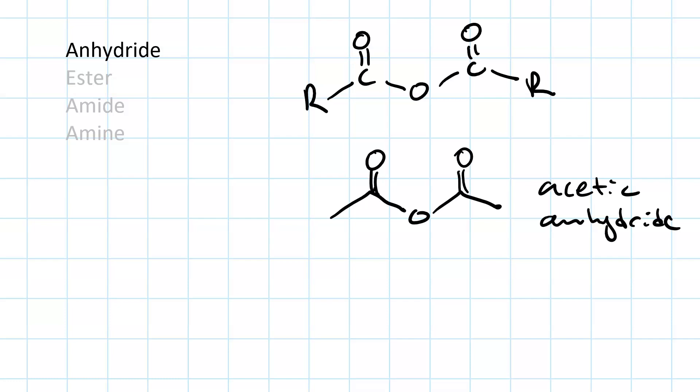An anhydride has two carbonyl groups bridged by an oxygen. Like that, it's like a cross between an ether and a ketone, or an ether with two ketones. An example, acetic anhydride. Condensed structure: CH3, C, parenthesis O, O, C, parenthesis O, CH3.